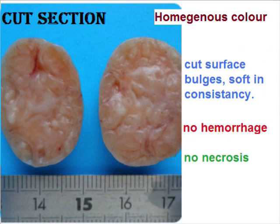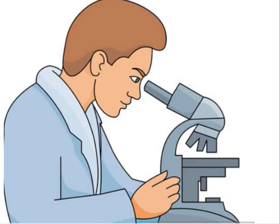The specimen was bisected, and the cut surface showed homogeneous color. It bulges out because of soft consistency. There were no hemorrhages and no necrosis. Tissue was processed, slides were made, and examined under the microscope. On microscopic examination, the following features were noted.